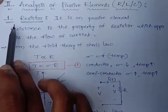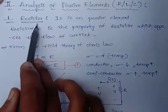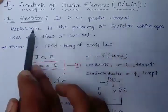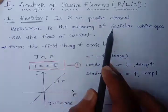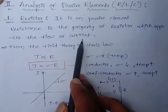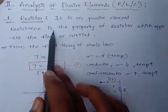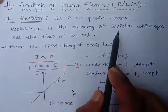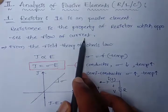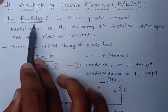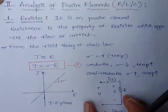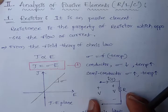In that, the first one is resistor. Resistor is a passive element, and resistance is the property of a resistor which opposes the flow of current. Resistor can be represented as shown in this figure.